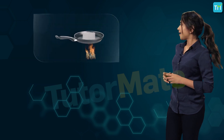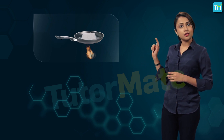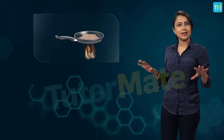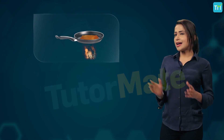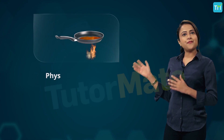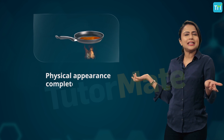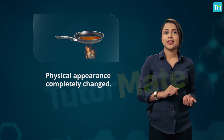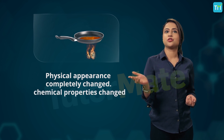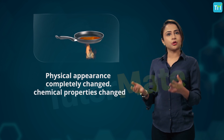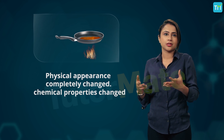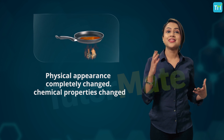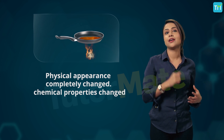For example, if you were to melt crystals of sugar in a pan, it would slowly start to melt and caramelize. As you can see, the physical appearance of sugar has completely changed — but that's not all. Its chemical properties have changed too. The heat from the cooking converts sugar molecules into different molecules with different properties, and that gives caramel its color and flavor.